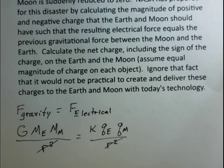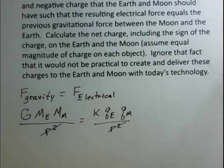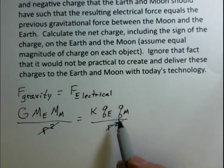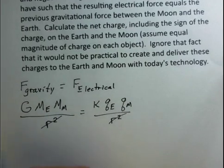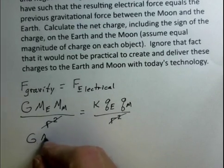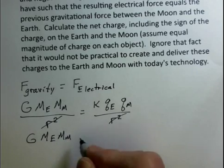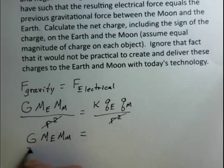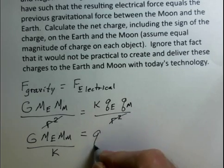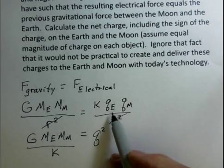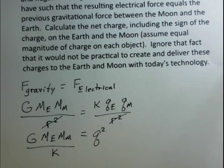Well, you can see that we're well on our way to solving this problem, especially since we say we're going to put the same charge on the Earth and the Moon. So we're going to have capital G, mass of the Earth, mass of the Moon. We're going to have to divide by this K on both sides, and then we get Q squared if we say the charge on the Earth is the same as the charge on the Moon.